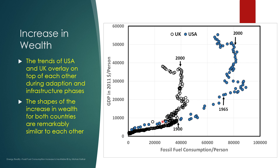If you look at the amount of personal and financial growth in both the United Kingdom and United States, the shapes of both these curves are remarkably similar to each other. There is a period where the infrastructure is built and GDP grows rather slowly. Then there is a period where there is an increase in GDP without significantly increasing fossil fuel consumption. In the United States, that period was between 1965 and 2000; in the United Kingdom, it was between 1900 and 2000. In the United States, GDP — the personal income — grew from $20,000 to $50,000.